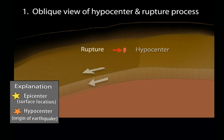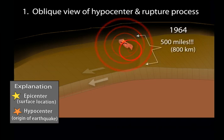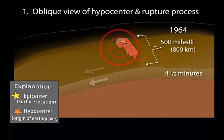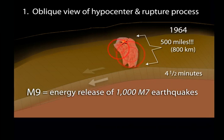The initial fault break in 1964 triggered a runaway rupture that displaced an area more than 500 miles long. The entire fault rupture elapsed over four and a half minutes, releasing immense seismic energy equivalent to a cascade of 1,000 magnitude 7 earthquakes.